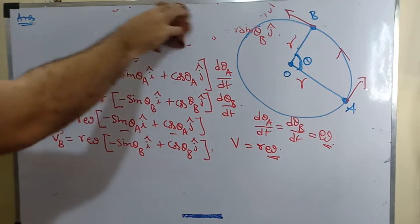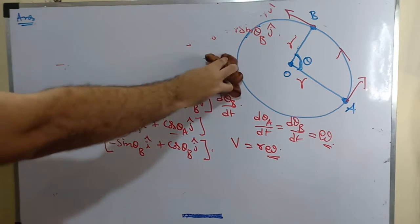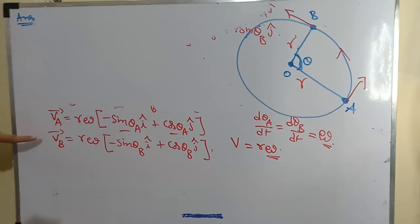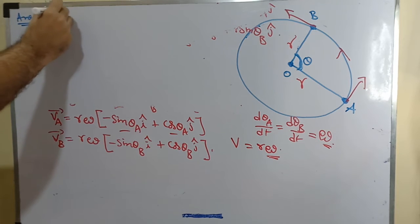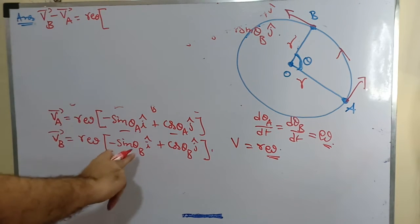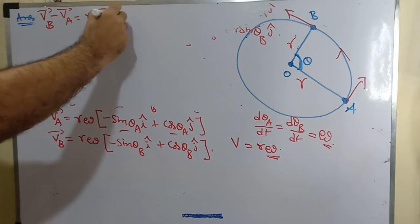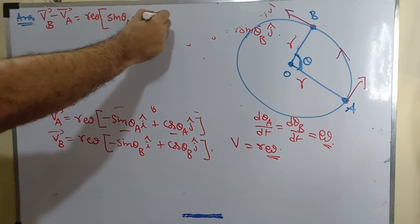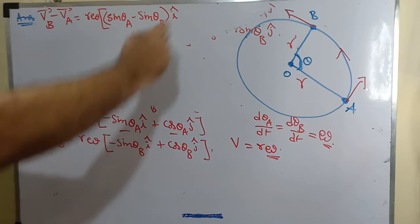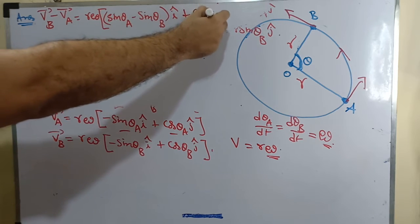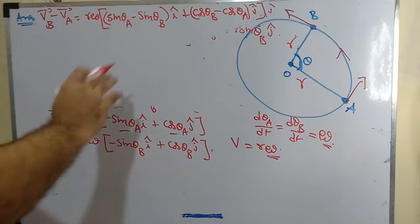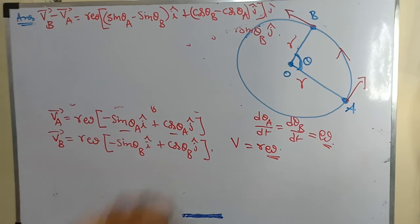Let us consider the difference of the velocities. I compute V_B minus V_A. Taking rω as common, I get (sin θ_a minus sin θ_b) î plus (cos θ_b minus cos θ_a) ĵ. Here theta_b minus theta_a equals theta, the angle described.